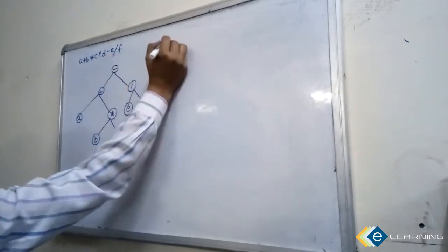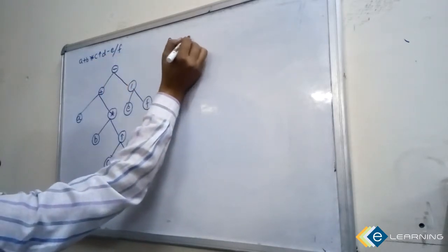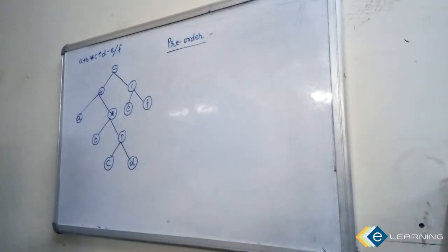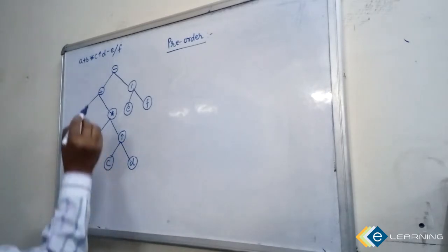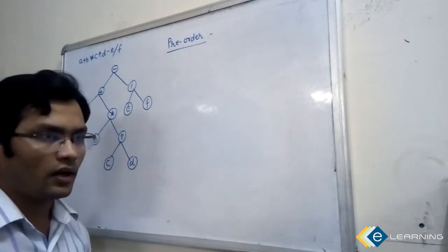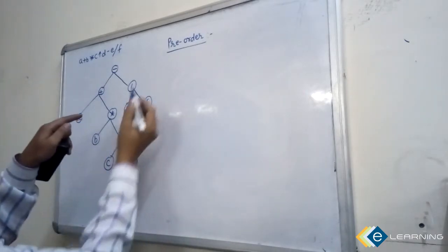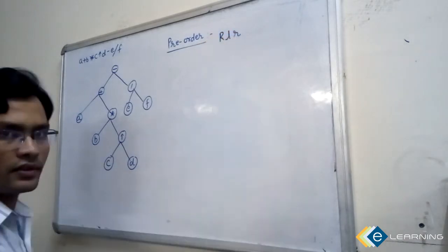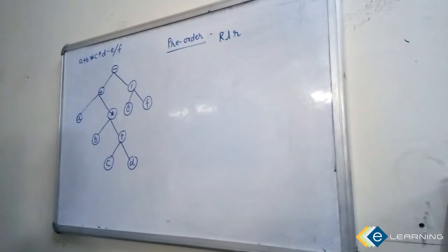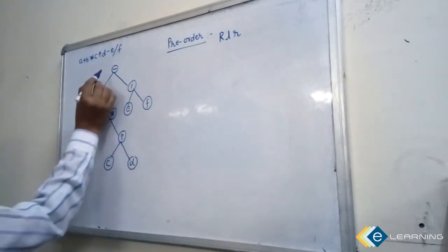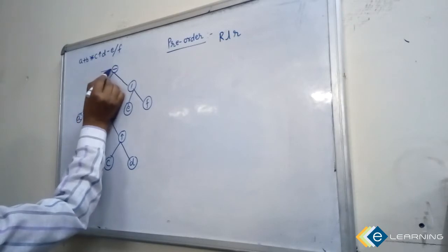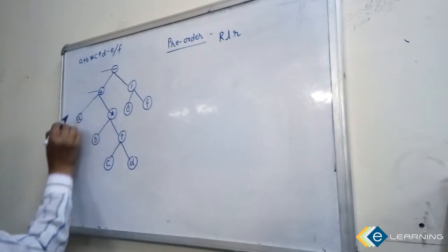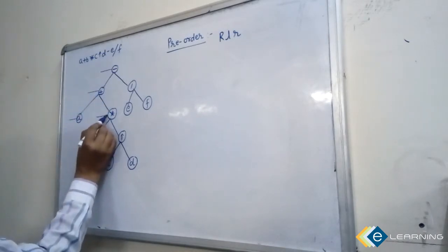Now I am going to find out pre-order. Pre-order - this is a shortcut. Pre-order means first traverse towards the root, then left, then right - root, left, right. In this tree the shortcut is to just mark a line to each and every node.